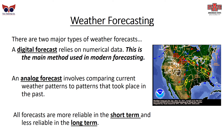Weather forecasting uses two major methods. The first is a digital forecast, using numerical data — this is the main method used in modern forecasting. There's also the analog forecast, which involves comparing current weather patterns to patterns that took place in the past. This is the more historical approach. All forecasts are more reliable in the short term and less reliable in the long term.